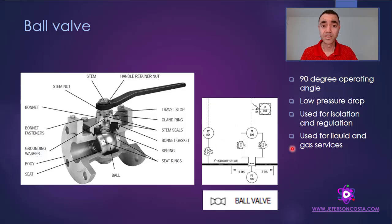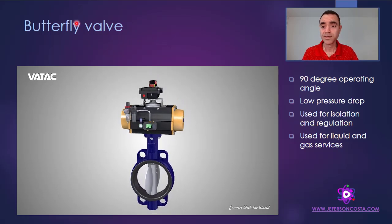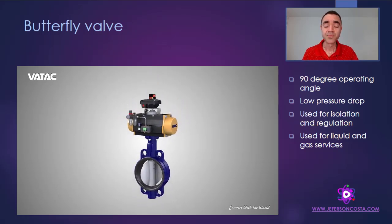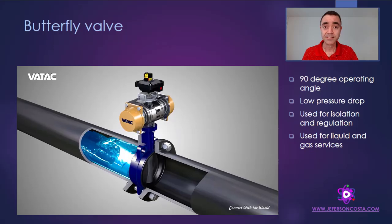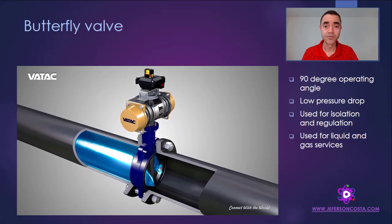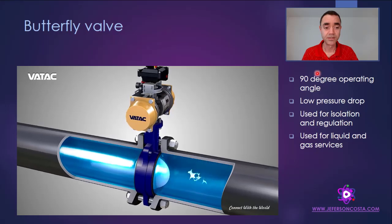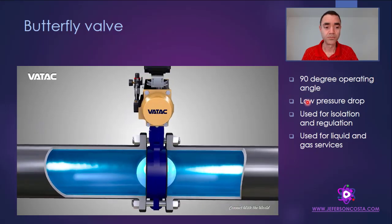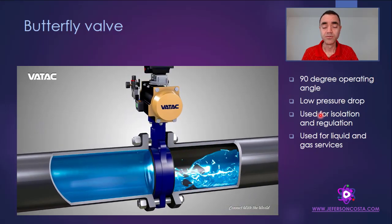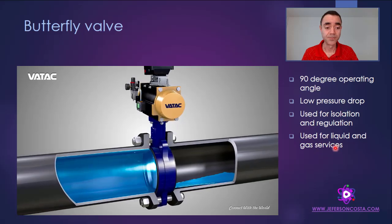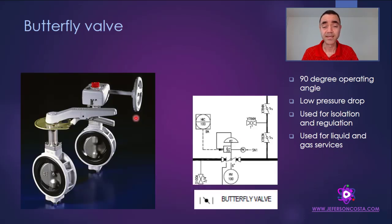Another very common valve in the industry is the butterfly valve. Its characteristics are very similar to the ball valve: 90-degree operating angle, low pressure drop, and it can be used for isolation and regulation with both liquids and gases. The main difference between them is that the ball valve uses a sphere, while the butterfly valve uses a disc.